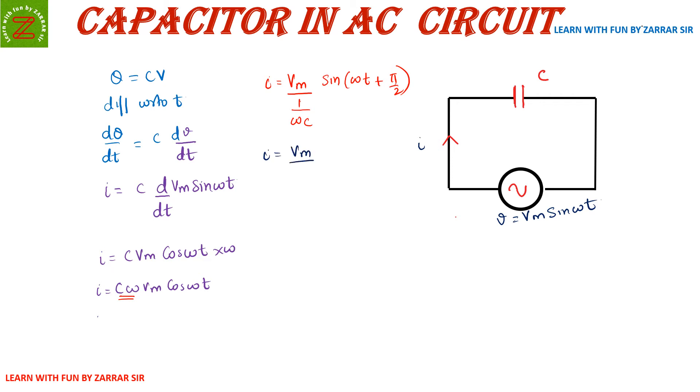I can write it as Xc × sin(ωt + π/2). Now we got a term Xc which is 1/(ωC), which is 1/(2πfC).